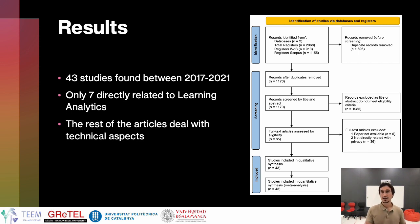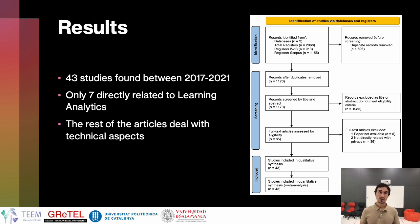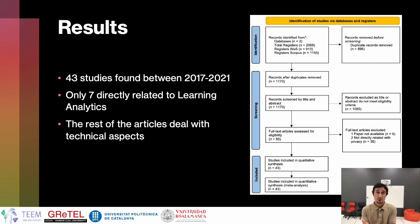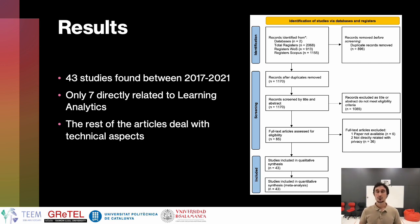We found more than 2,000 papers in those databases, and only 43 studies were related to data privacy between 2017 and 2021.